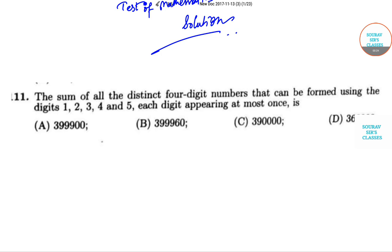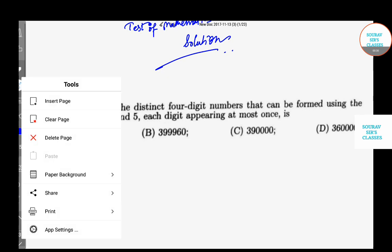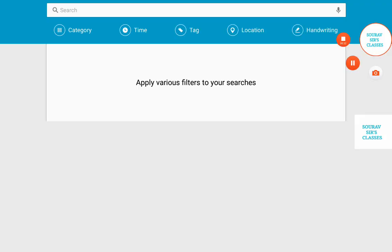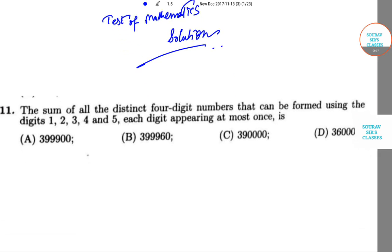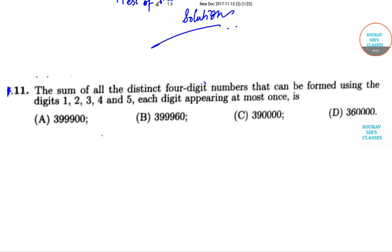Let's start with the first question. This is question number 111 from the book Test of Mathematics. The sum of all distinct four-digit numbers that can be formed using the digits 1, 2, 3, 4, and 5, each digit appearing at most once.